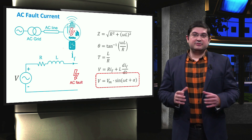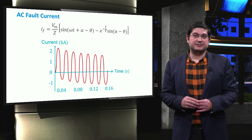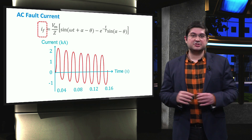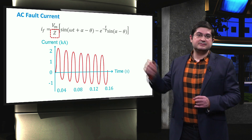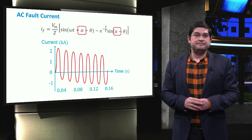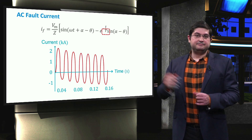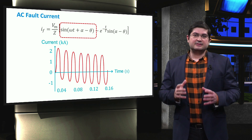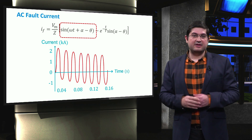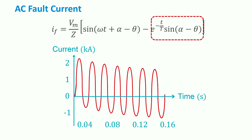Note that here we do not formulate the fault impedance. If we solve the previous differential equation, the fault current IF is obtained as a function of the voltage amplitude Vm, the amplitude of the impedance Z, the angular speed omega, the initial phase alpha, the impedance phase angle theta, and the time constant T. This equation represents two different components: the first is the steady-state AC sine wave with the angular speed omega, and the second is a DC exponential decay with the time constant T.